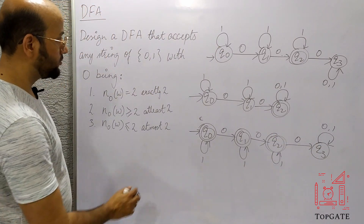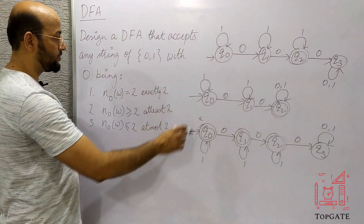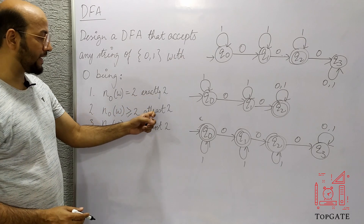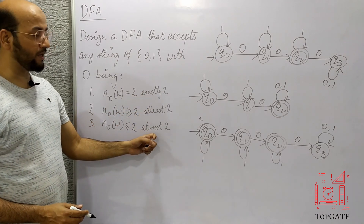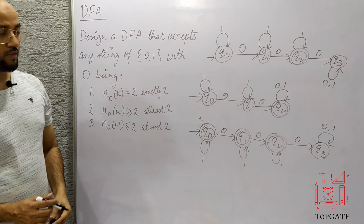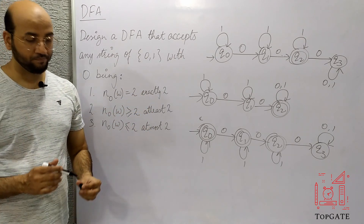So these are the three cases: exactly 2, at least 2, and at most 2 zeros. That is all. Thank you so much.